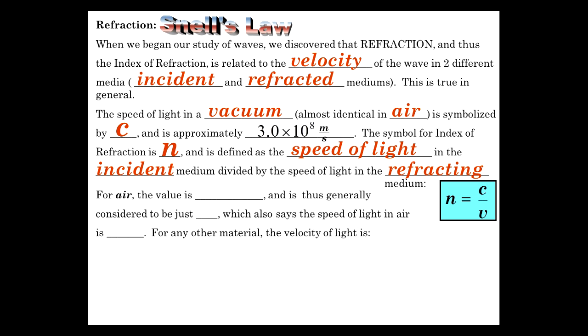Air is very similar to a vacuum, and so that ratio ends up giving us 1.0003. For all practical purposes, that's just 1. So we assume that the speed of light in air is right around C, which it is.